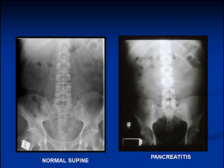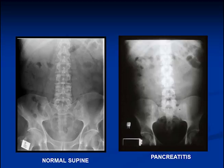Now we'll look at the retroperitoneal structures. The kidneys and both psoas margins are retroperitoneal. What happens when we develop pancreatitis? Pancreatitis is caused by inflammation of the retroperitoneal pancreas, and it causes an outpouring of fluid into the retroperitoneal tissues. This will obliterate all the fatty margins, so when a patient has pancreatitis, we lose the psoas margin and we lose the outline of both kidneys, and you can see that quite clearly on this second view.